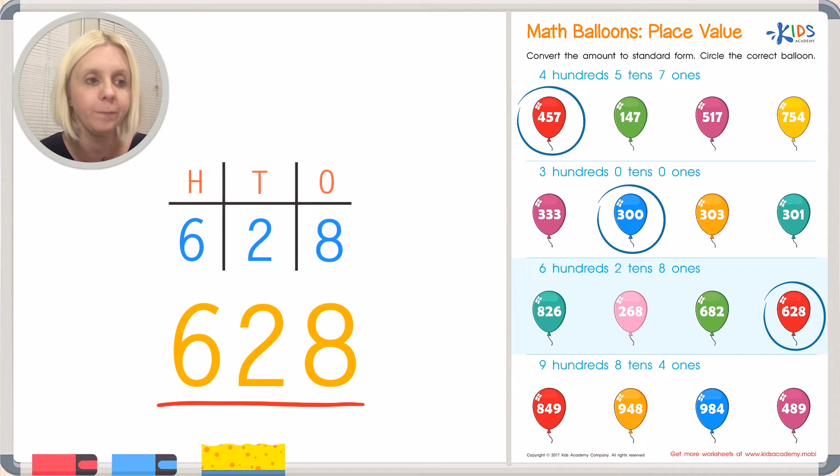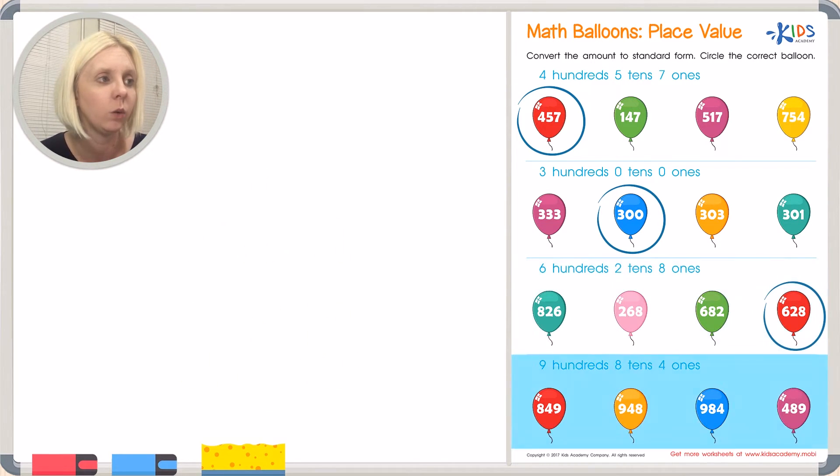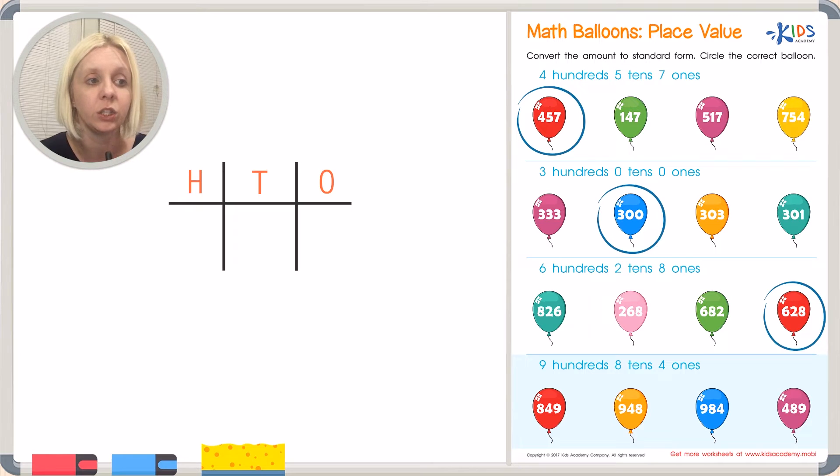And we've got one more here. Let's start once again with our T chart and let's write that out. We've got our ones place right over here and our tens place and our hundreds place. So it says nine hundreds. I'm going to put that right here with the hundreds. And then eight tens. All right. So I'm going to put the eight right here in the tens place and four ones. All right. And then let's write that out to the side all squished together.